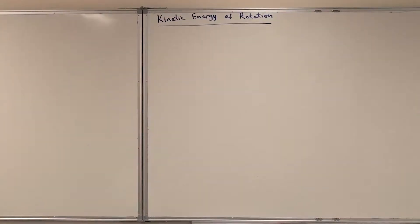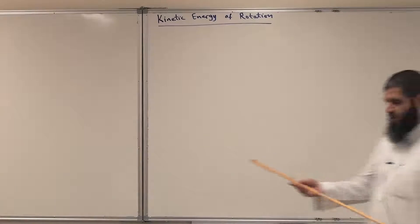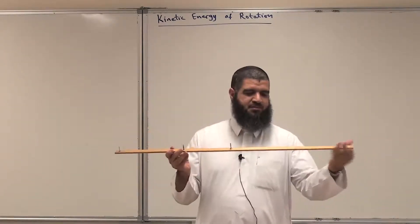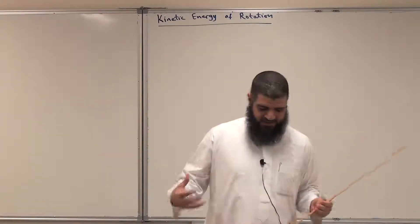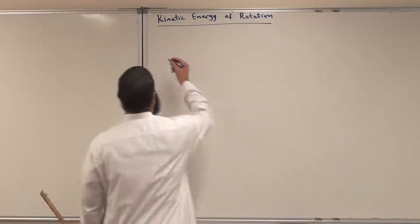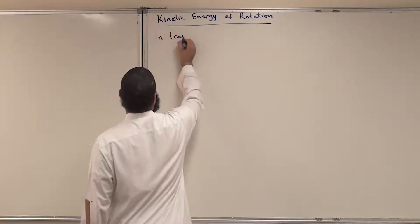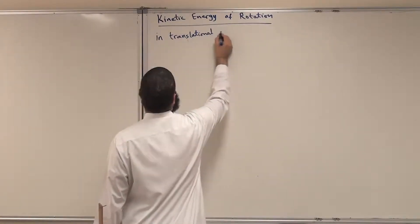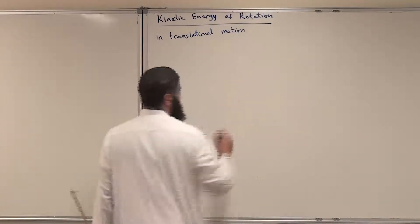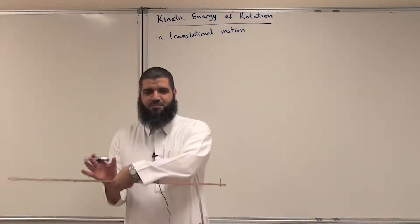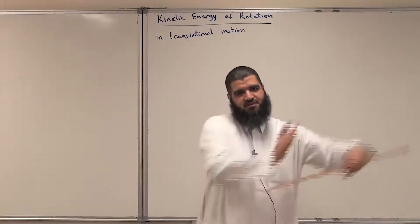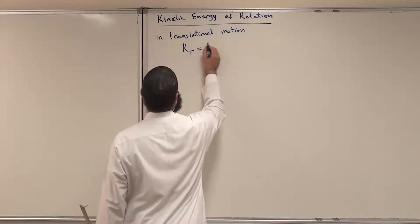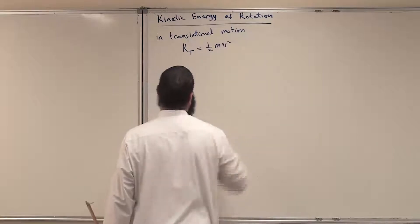Why? Because it has a mass m and all of it is moving with the same v. All parts — this part, this part, that part — all of them have the same v. So, in the case of translational motion — which means the object moves from one place to another — K translation is defined to be one-half m v squared.